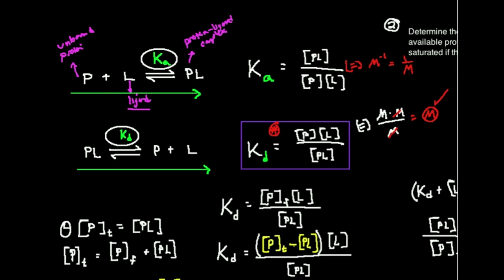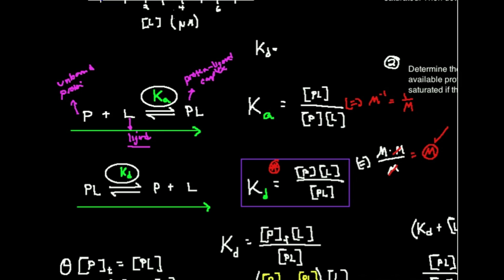It's that K_D is the reciprocal of K_A. So K_D equals 1 over K_A, or you can say K_A is equal to the reciprocal of K_D.